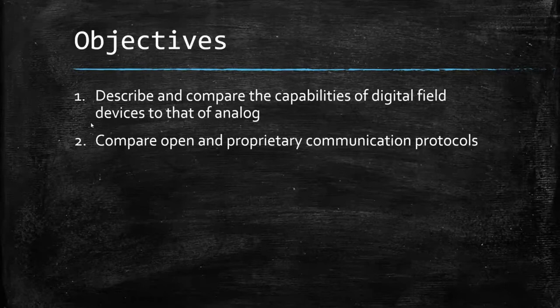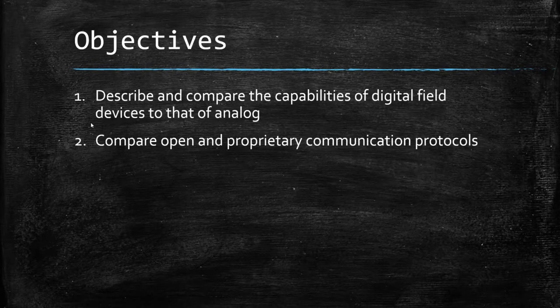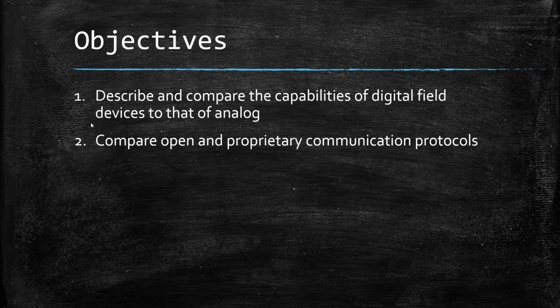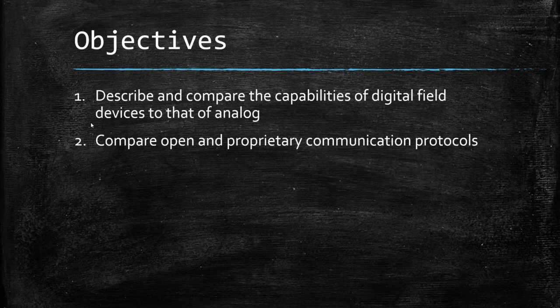This is the transition point between third and fourth year. Last year we started talking about HART, which is an analog style that is a hybrid — analog with some of the benefits of digital. The idea of fourth year is that everything is digital; we kind of leave the analog world behind us. We're more worried about digital communication and how we get information back and forth. We're going to quickly look at the different capabilities between digital devices and those analogs, pros and cons, and then quickly look at open and proprietary communication protocols.